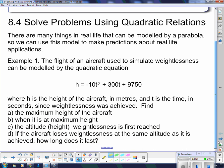So this thing has H as the height of the aircraft in meters and T as the time in seconds since weightlessness was achieved. So we're going to find the maximum height of the aircraft, when it's at its maximum height, the altitude weightlessness is first achieved, and if the aircraft loses weightlessness at the same altitude it is achieved, how long does it last? So those are the things we're looking at.